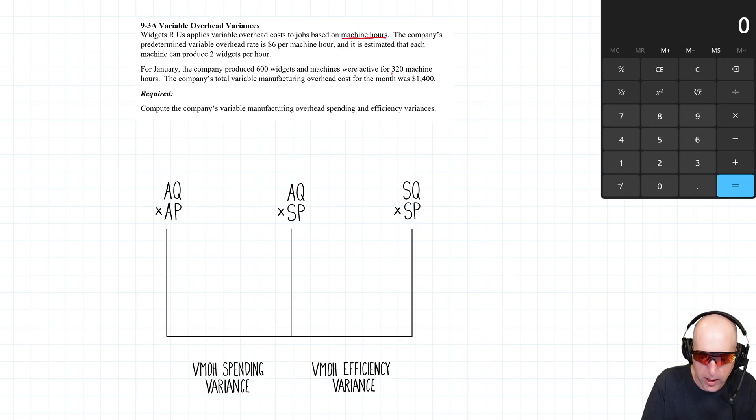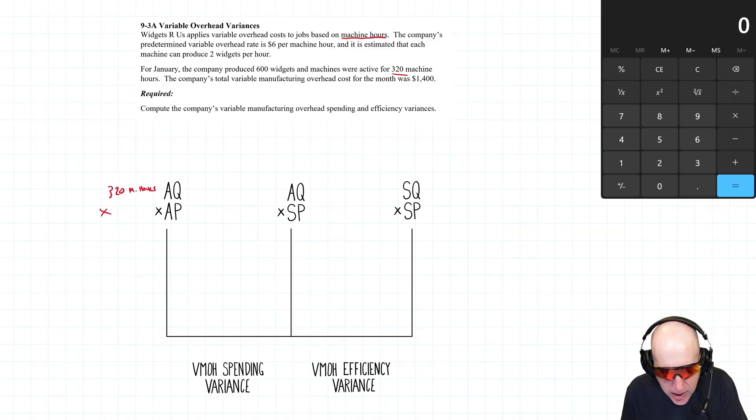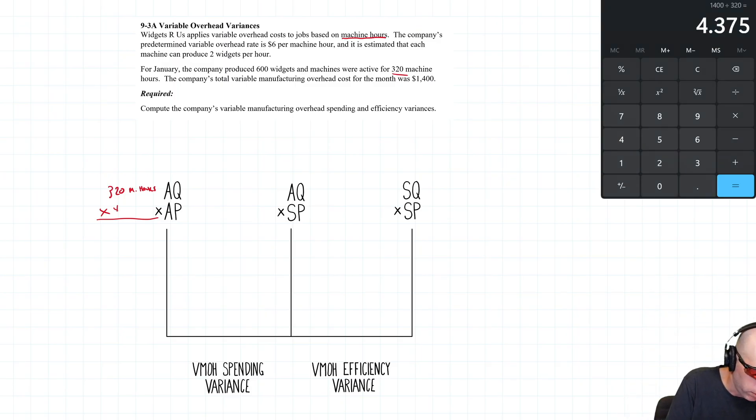AQ – the actual quantities, the actual number of machine hours these things were running – 320 machine hours. AP is the actual price paid per machine hour. We just know it's fourteen hundred in total. Fourteen hundred divided by 320 is 4.375, so that totals again to fourteen hundred.